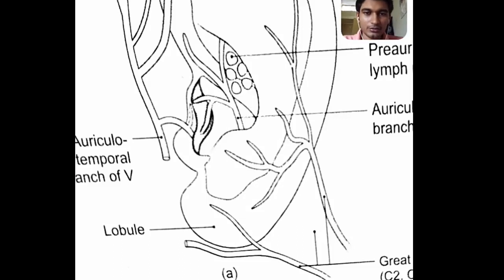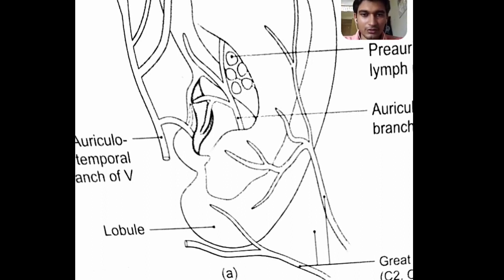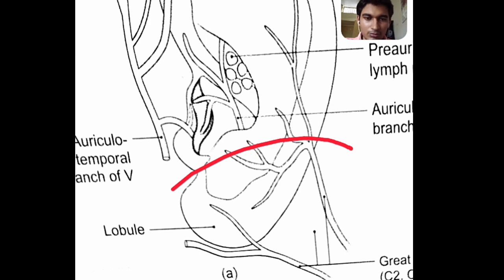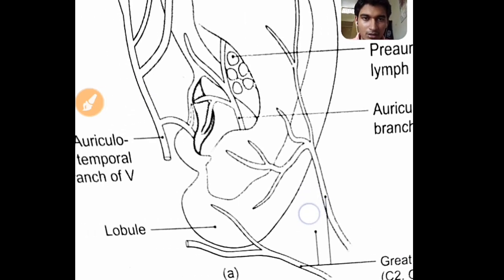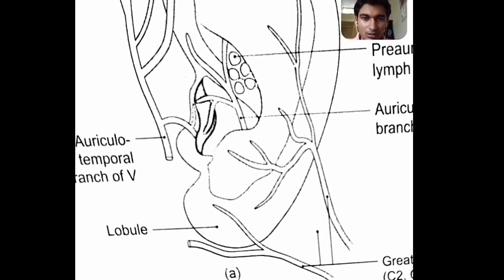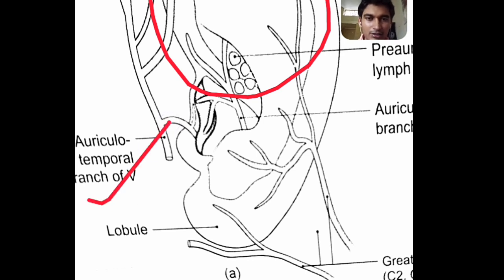We are going to discuss the nerve supply of the pinna. This diagram represents the lateral surface of the pinna. The lower one-third of the lateral surface is supplied by the greater auricular nerve, and the upper two-thirds of the lateral surface is supplied by the auriculotemporal nerve.